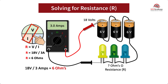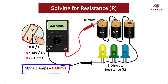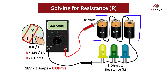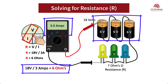Solving for Resistance in Ohms: to find the Resistance in a circuit, cover up the R in the Ohm's Wheel and enter the two known values of Voltage and Amps. By knowing the Voltage and measuring the Amps flowing through the circuit, we can determine the Resistance. There are three 6 Volt batteries equivalent to 18 Volts, and the digital meter reads 3 Amps. With these two values, we get 18 Volts divided by 3 Amps equals 6 Ohms.